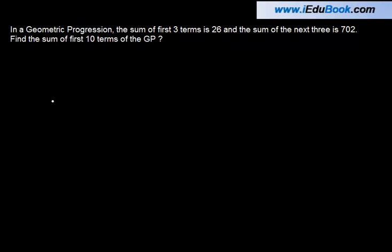In a geometric progression, the sum of first three terms is 26 and the sum of next three is 702. Find the sum of first ten terms of the GP.